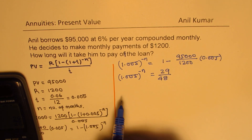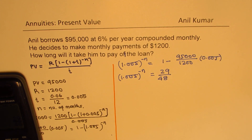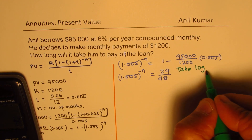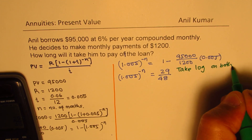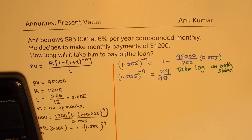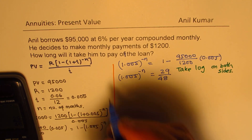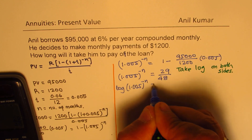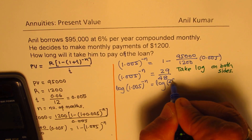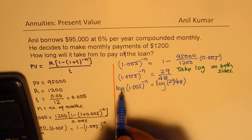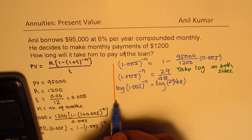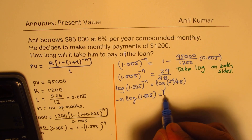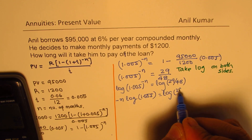Now, how do we solve this? The technique is to use logarithms. We take log base 10 on both sides. So we get log of [1.005 to the power of minus n] equals log of (29/48). Using the properties of logarithms, we can write this as minus n times log(1.005) equals log(29/48).